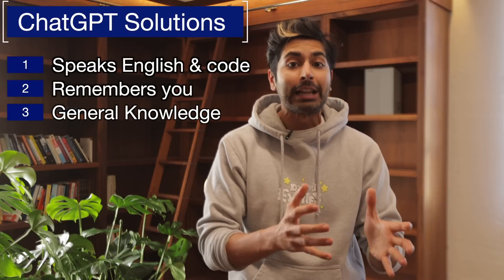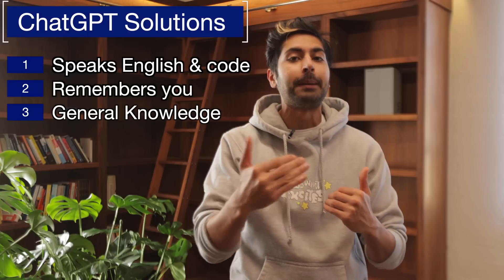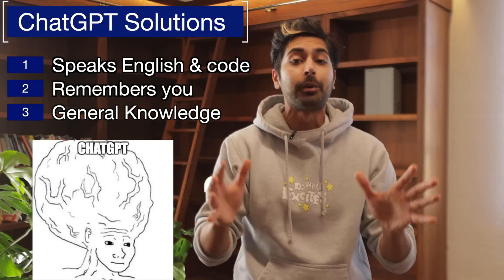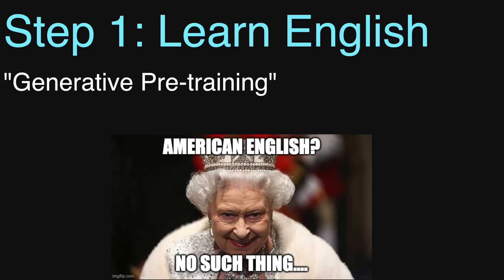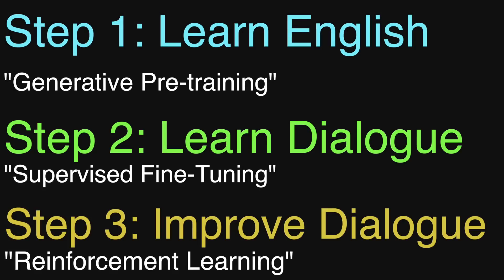It can generate legible English and code, it can remember what you say up to a certain limit, and it's able to talk about a very diverse range of topics. It was created in three steps: generative pre-training to learn English, supervised fine-tuning to learn dialogue, and reinforcement learning from human feedback to improve its dialogue based on human preferences.